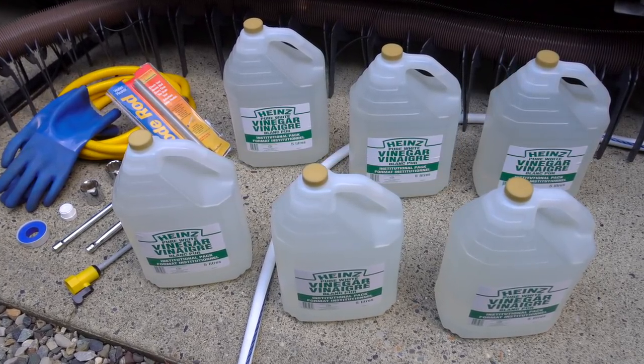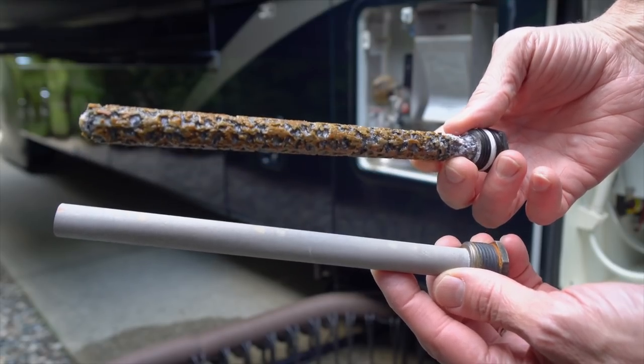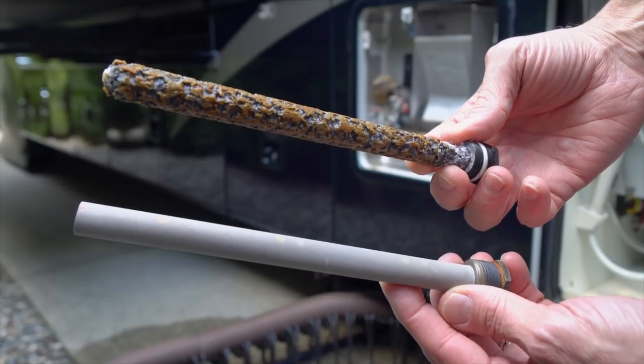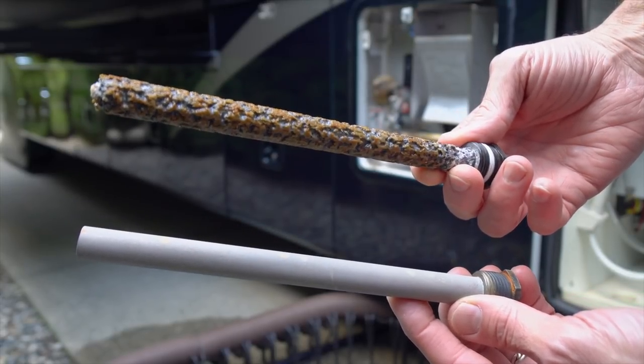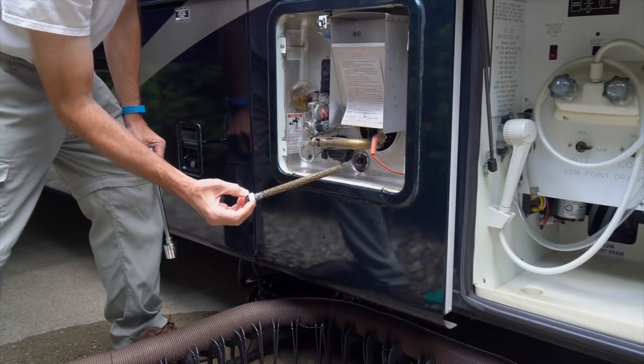With this inspection complete, we're just going to close up the tank and carry on. While we usually replace the anode rod every year whether it needs it or not, we're going to reinstall this one. There's still more than enough material left to protect our tank for another year.